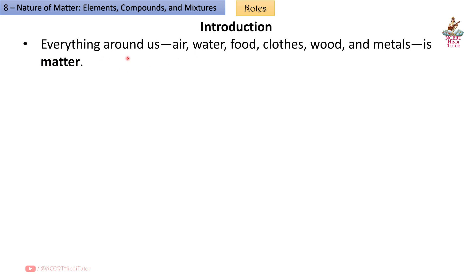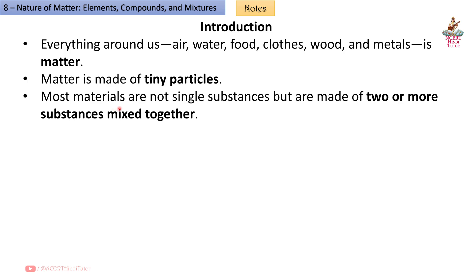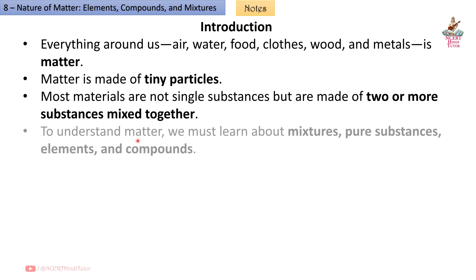Introduction: Everything around us — air, water, food, clothes, wood and metals — is matter. Matter is made of tiny particles. Most materials are not single substances, but are made of two or more substances mixed together. To understand matter, we must learn about Mixtures, Pure Substances, Elements and Compounds.